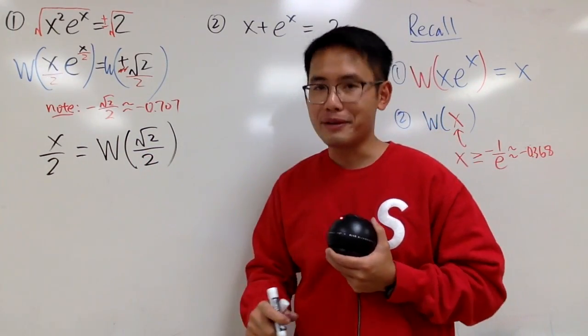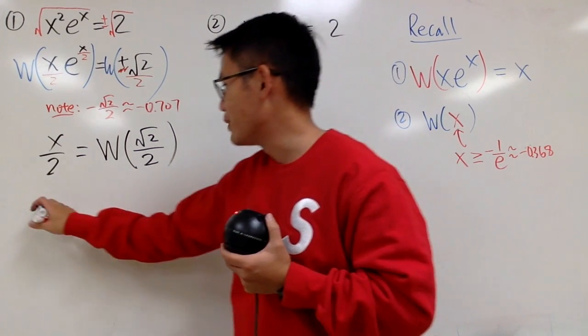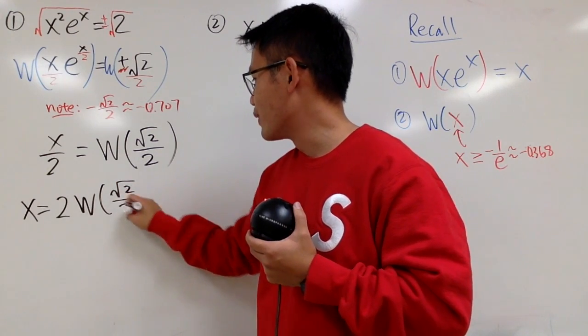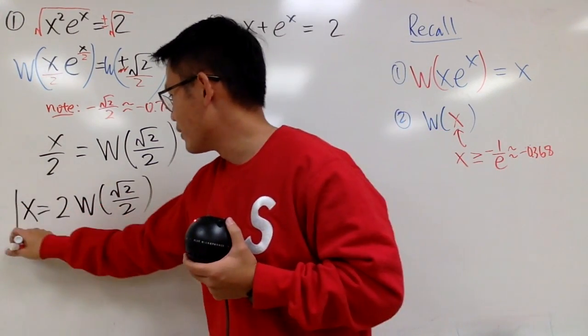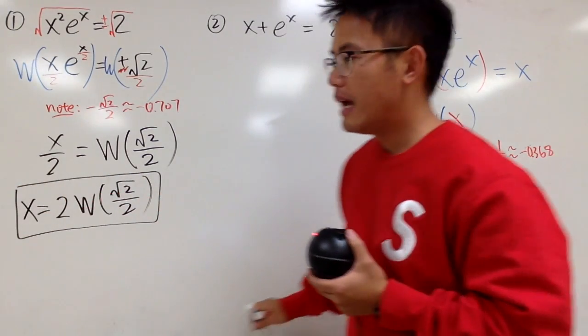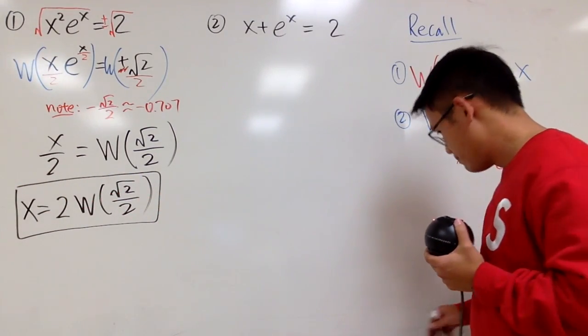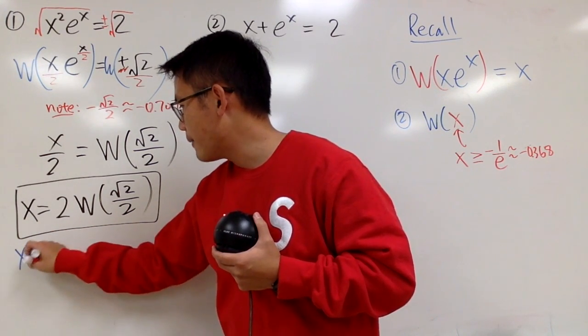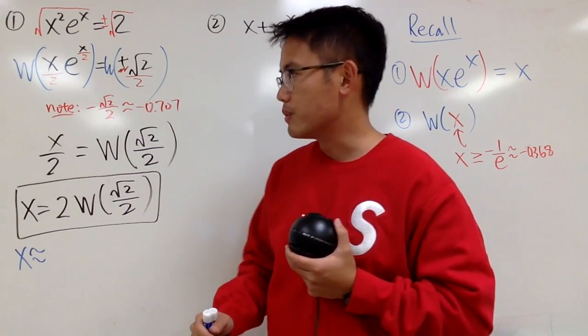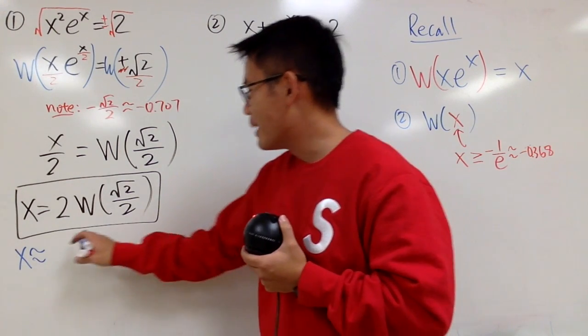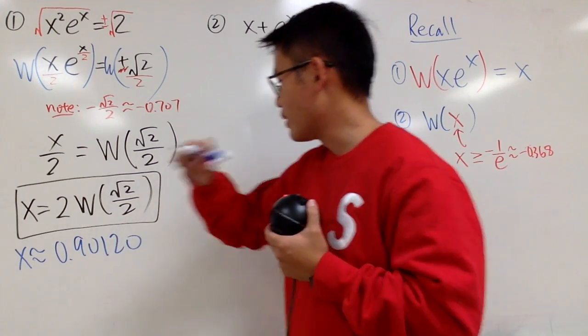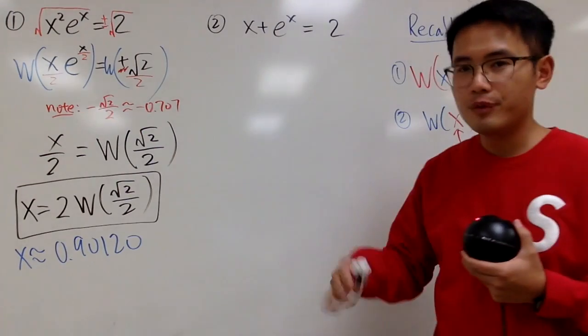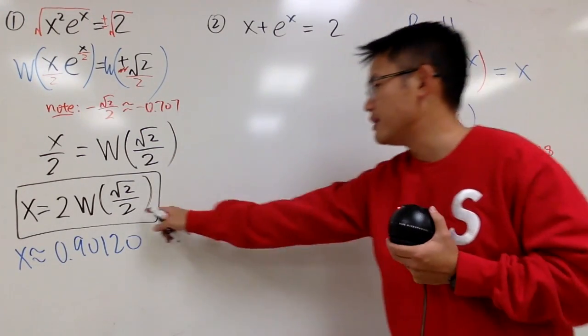x over 2 equals W of positive square root of 2 over a regular 2, like that. In the end, how can we solve for x? Of course, just multiply both sides by 2. x equals 2 times W of square root of 2 over 2. So many 2's out here, so good, right? So this right here is the answer in the exact form. And just to make you feel better, that will tell you, this right here, if you enter this on Wolfram Alpha, and once again, W is the product log, you get approximately 0.90120. And yes, if you put this into the x and the x there, you end up with approximately 2, so really, really close. But this is the exact form.